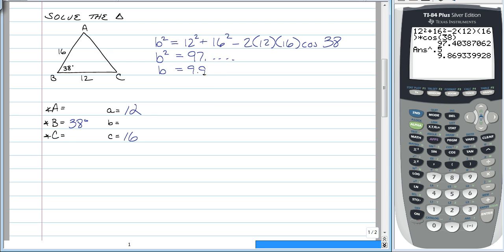This is a side length, so b is equal to 9.9. We're going to follow the same rules as the last one. Sides to the nearest tenth, angles to the nearest minute.